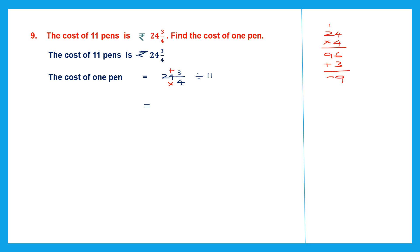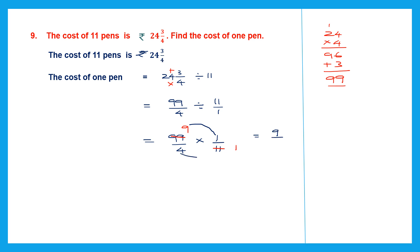So we get 9 and 9 — that's 99. So the improper fraction is 99 by 4, divided by 11 by 1. This is division which will change to multiplication. The first rational number remains the same, division changes to multiplication, and 11 by 1 becomes 1 by 11. We can cancel 99 and 11: 11 ones are 11 and 11 nines are 99. After cancelling, multiply the numerators: 9 ones are 9, and the denominators 4 into 1 — 4 ones are 4. So we get 9 by 4.